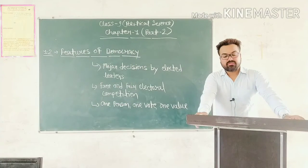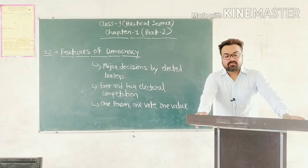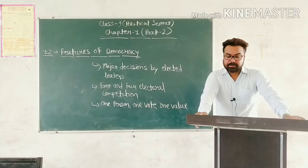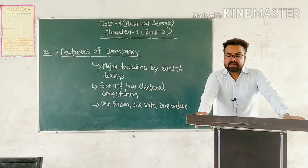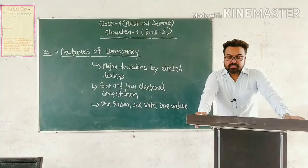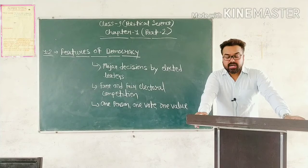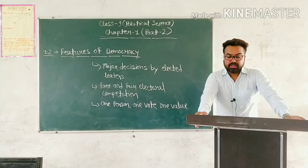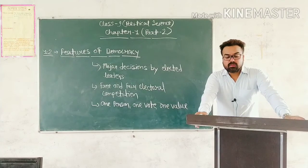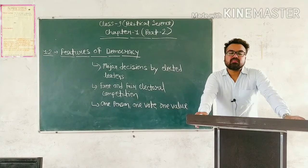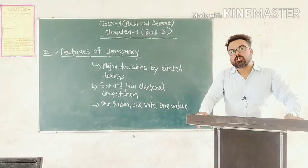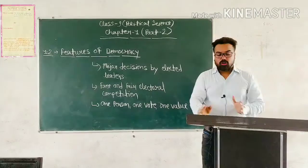In China, elections are regularly held every five years for electing the country's parliament called the National People's Congress. یہ چین کی پارلیمنٹ کا نام ہے۔ The National People's Congress has the power to appoint the president of the country. It has nearly 3000 members elected from all over China, and some members are elected by the army.